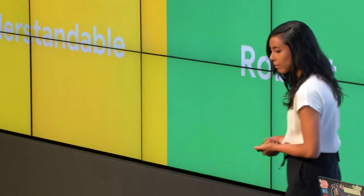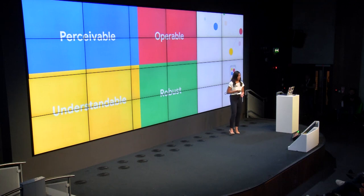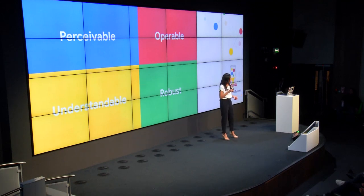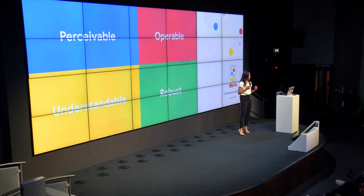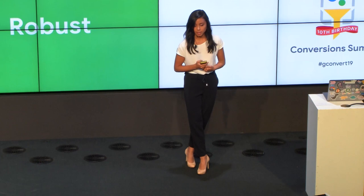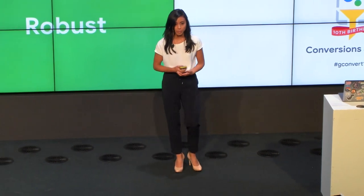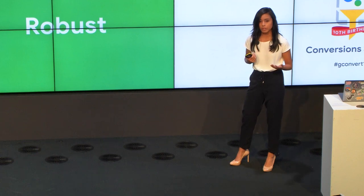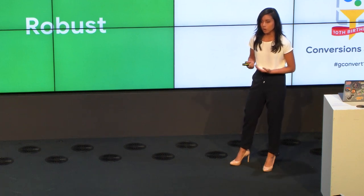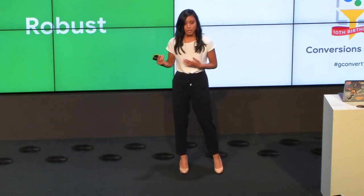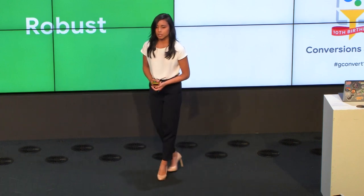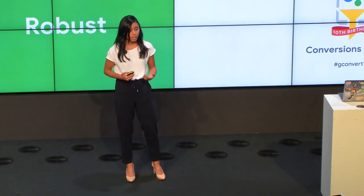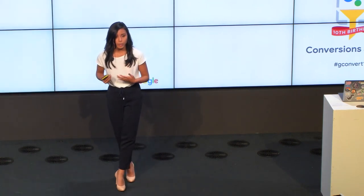To be perceivable means the user should be able to perceive content with at least one of their senses — sight, hearing, or having high enough contrast for limited sight. The user should be able to operate it — tab through with a keyboard, or have big enough touch targets for fingers of all sizes. Content should be understandable across different reading levels and languages. And it should be robust enough for different user agents like screen readers, or lower-end devices on a poor network.